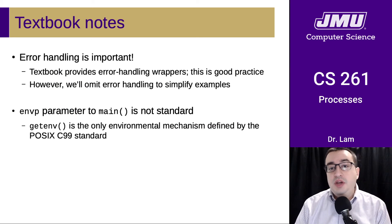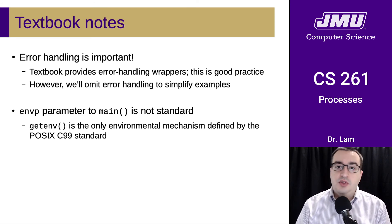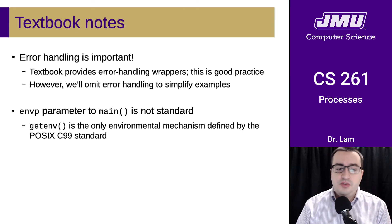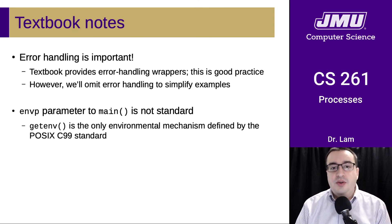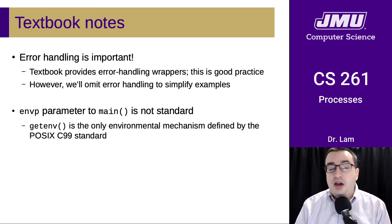For instance, the textbook defines an uppercase-O Open function that is itself a wrapper for the open system call and checks the return value. This is good practice, but we'll be omitting error handling in some examples just to simplify them. Of course, if you're using these functions in a real program, you should always check return values and error conditions to make your code robust in the presence of failures. One more caveat: the ENV parameter to main is not actually standard — if you want to be POSIX compliant, the getenv function is really the only environmental mechanism defined by the POSIX C99 standard, which is what we're using in this course.